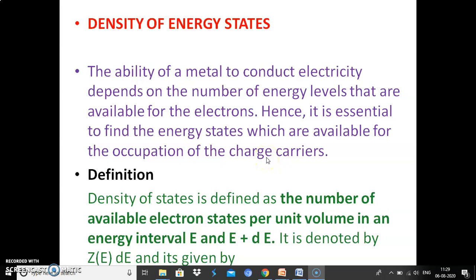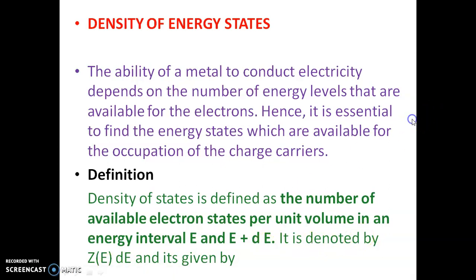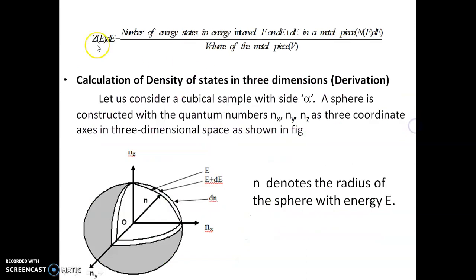The actual definition is: density of states is defined as the number of energy states per unit volume of metal in the energy range E to E plus dE. It is denoted by Z(E)dE, which equals the number of energy states in the interval E to E+dE divided by the volume of metal.